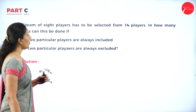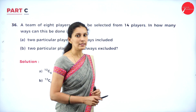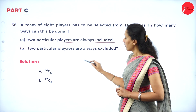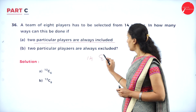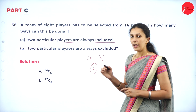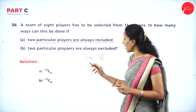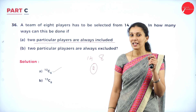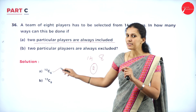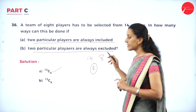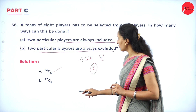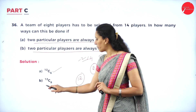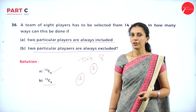A team of 8 players has to be selected from 14 players. In how many ways can this be done if 2 particular players are always included? Since 2 persons are already included, you need to choose only 6 from the remaining 12, so the number of selections is 12C6. If 2 particular players are always excluded, remove those 2 from 14, leaving 12 persons, and select all 8 from them, so the number of selections is 12C8.